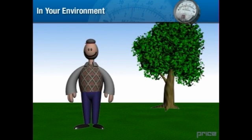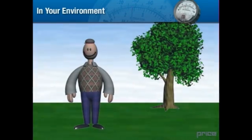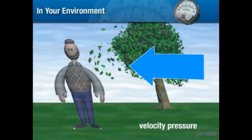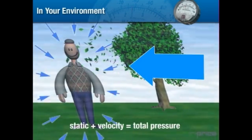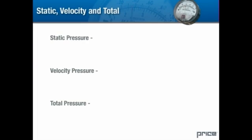As mentioned before, we experience about 14.7 psi of atmospheric pressure. We refer to this type of pressure as static pressure. When the wind starts to blow, we have to deal with the added force due to the speed of the wind. We call this pressure the velocity pressure. The sum of the static and velocity pressures equals the total pressure. These three types of pressure — static, velocity, and total — are associated with HVAC systems as well.